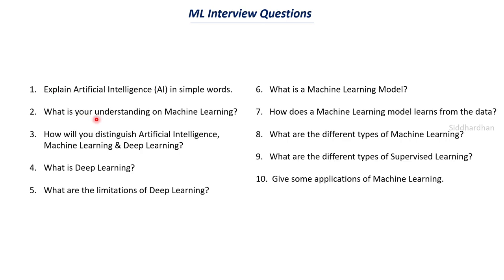The second question is: what is your understanding on machine learning? Third: how will you distinguish artificial intelligence, machine learning, and deep learning? Fourth: what is deep learning? Fifth: what are the limitations of deep learning? The sixth question is what is a machine learning model and how does a machine learning model learn from data — these two are very tricky and important. Many people may say neural network, logistic regression, or support vector machine, but we need a clear answer for what a machine learning model actually is. The eighth question is the different types of machine learning, the ninth is types of supervised learning, and finally the different applications of machine learning.